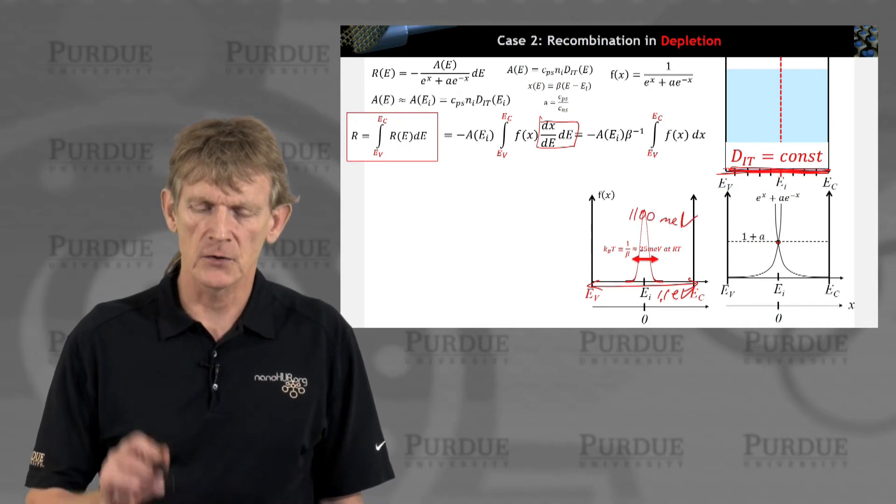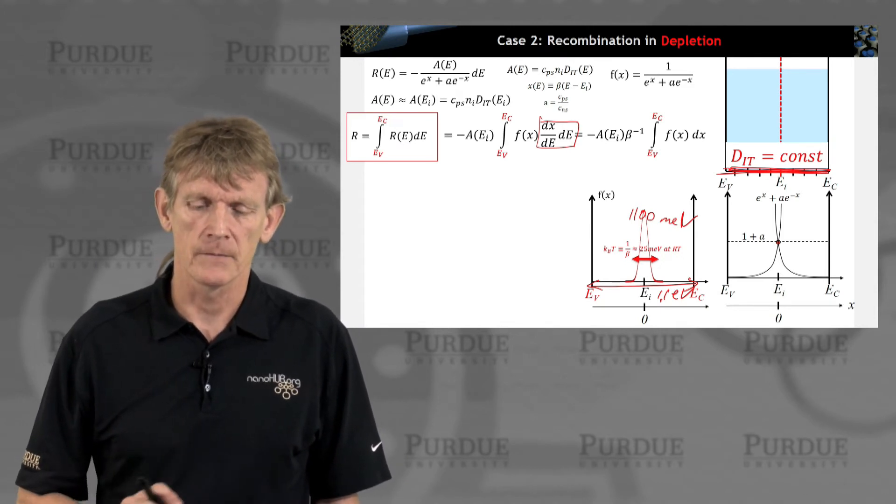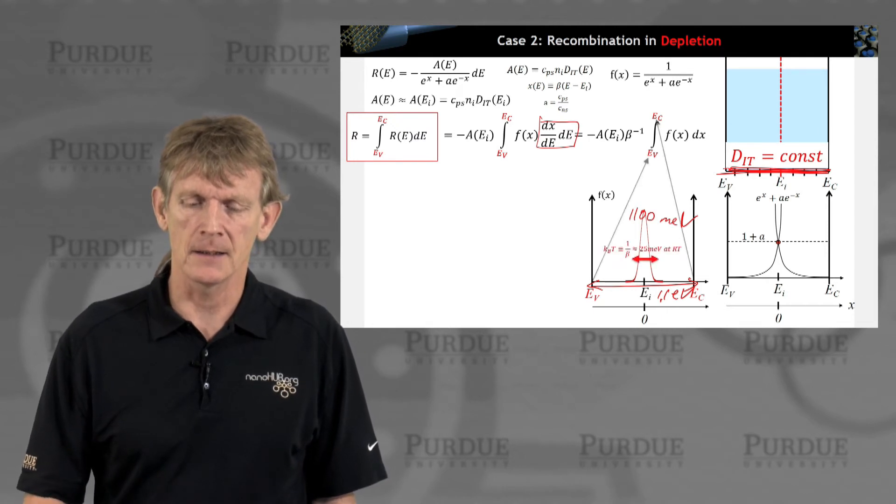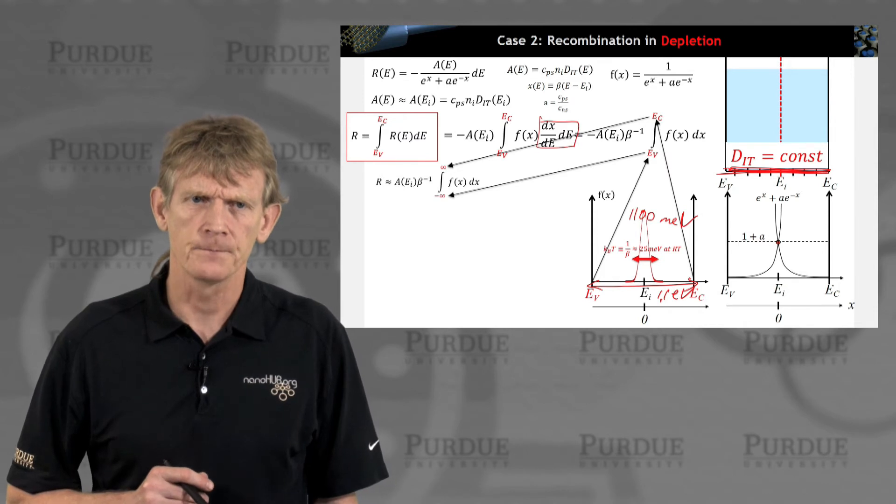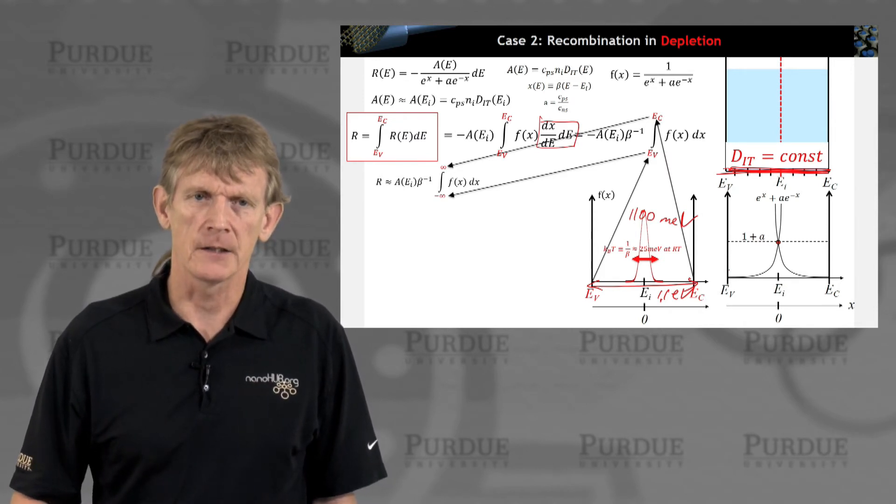This very narrow spiky function is narrow and spiky in a wide energy range. That means I can do an approximation. I can replace e v and e c by infinity.